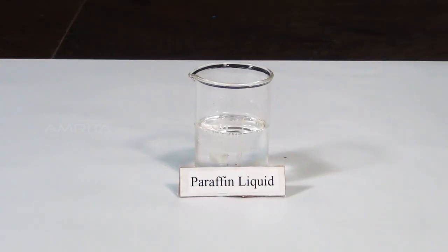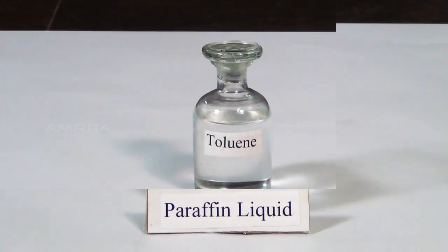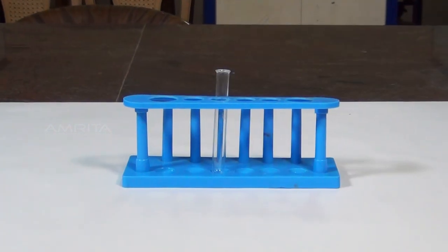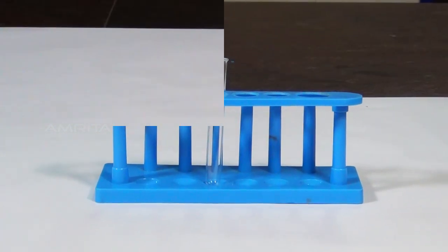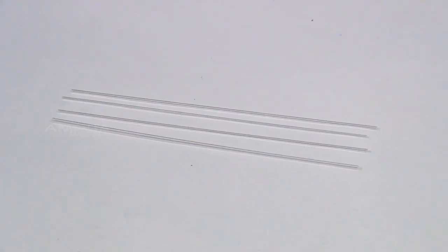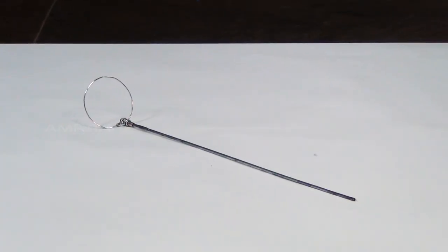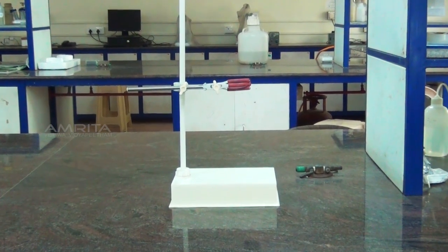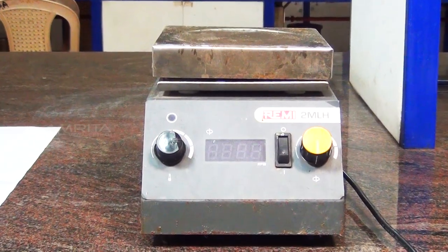Liquid paraffin in a 100ml glass beaker, toluene, a small thin walled test tube, thermometer, capillary tubes of approximately 5-6cm length, dropper, rubber band, stirrer, stand with clamp, bunsen burner and a hot plate.